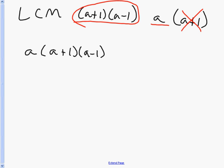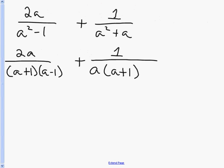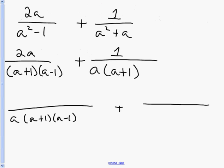Getting the LCM is always the first step. Now I'm going to build each one of my fractions to have that same denominator. My first fraction needs a denominator of a(a+1)(a-1), and my second fraction also needs a denominator of a(a+1)(a-1).